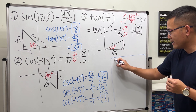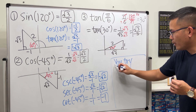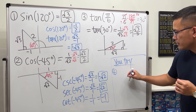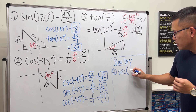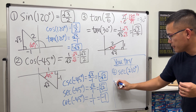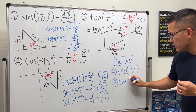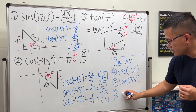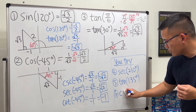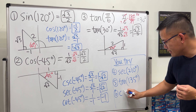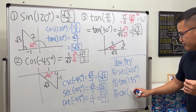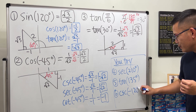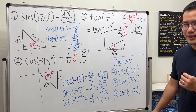Before we go, here are some practice questions. Number four: figure out secant of 210 degrees. Number five: figure out tangent of 135 degrees. Number six: figure out cosecant of negative 120 degrees. Leave your answers in the comments and let me know.